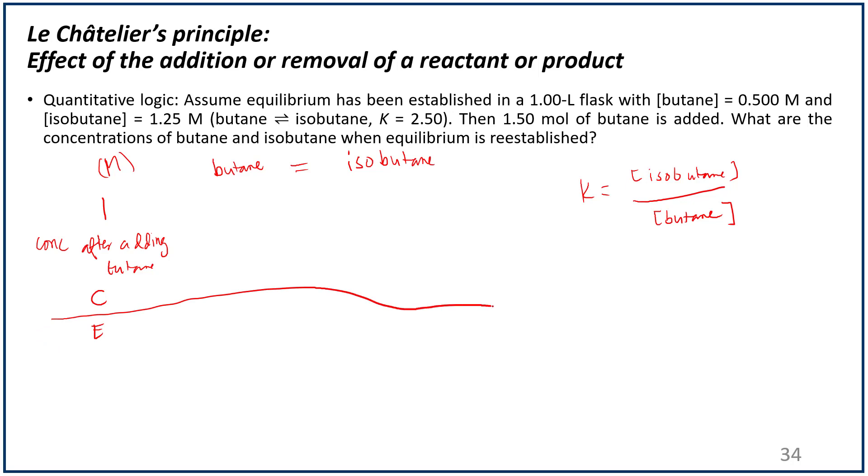We have initially a concentration of butane to be 0.500, then isobutane is 1.25. Now after equilibrium has been established, this is actually initial, but keep in mind this is already at equilibrium. After equilibrium has been disrupted, you have the following concentrations. We added 1.5 mole of butane, and we are working with a 1 liter flask. So that should be 0.500 plus 1.50 of butane. For isobutane, this remains 1.25.